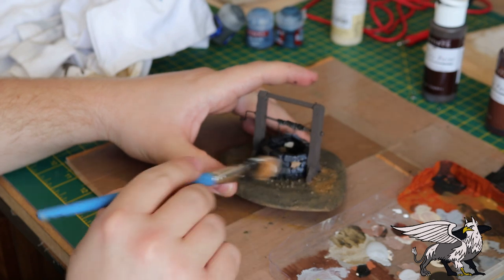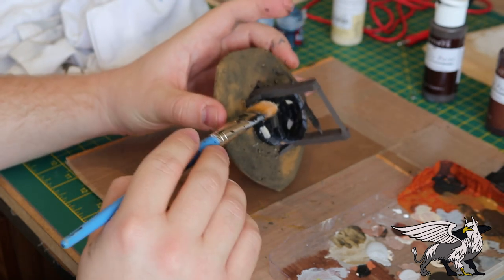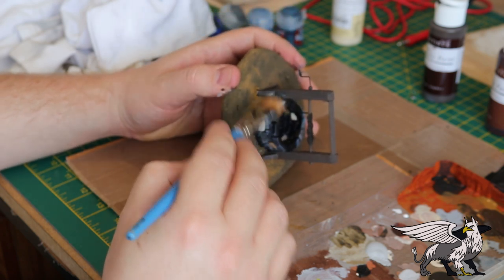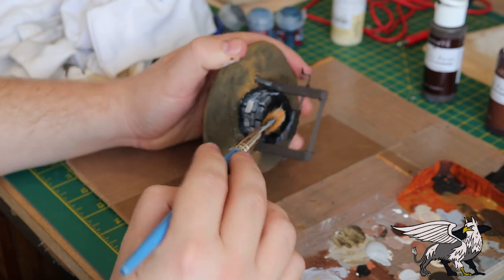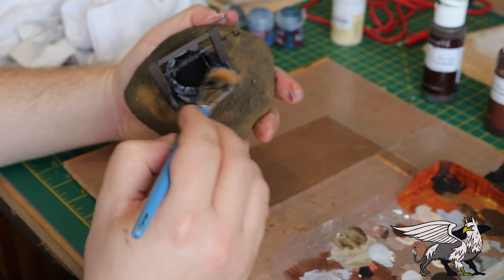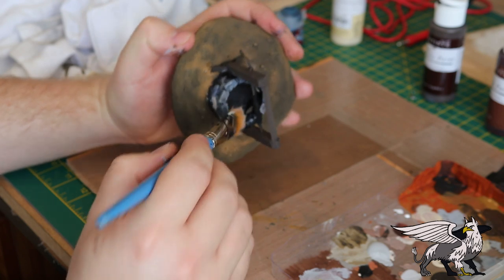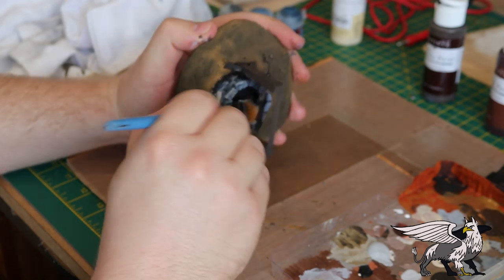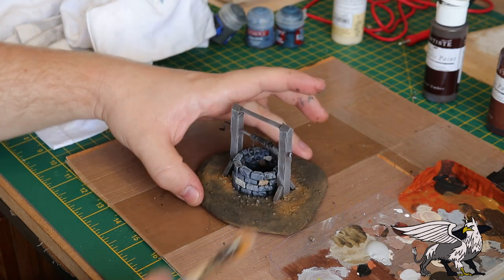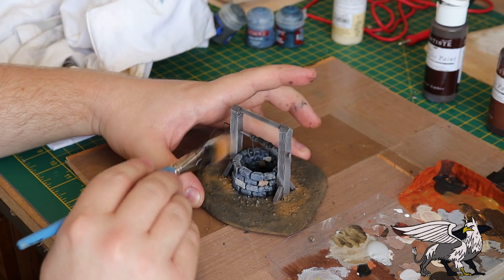And now to really pick up that detail, we're going to use a dry brush method using a fairly big brush. I'm using a medium gray for pretty much the entire thing, so all the stonework, all the well, all of the woodwork as well, just to pick out the texture. In the woodwork, you find a lot of the time wood tends to be a grayish color rather than brown.